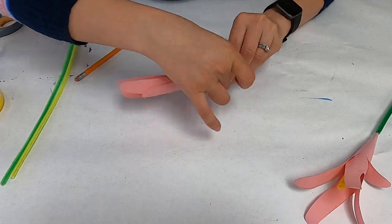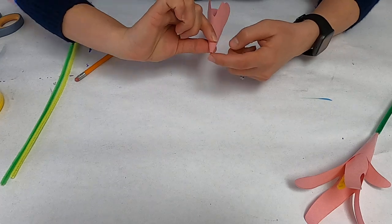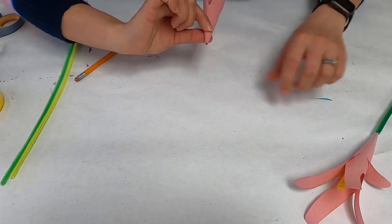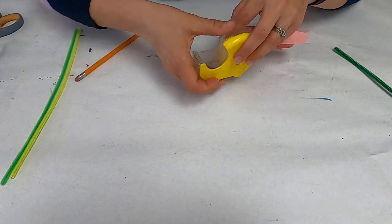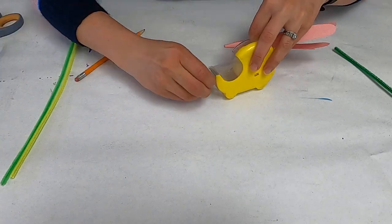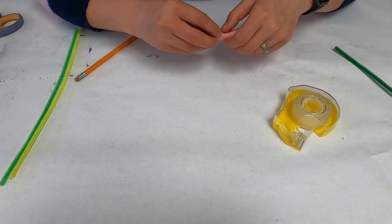You're going to roll it like that, so you want it to look like this. You want a hole big enough for your pipe cleaner to go through. It might be easiest to just take some tape, some clear tape, and then just tape it off right here.